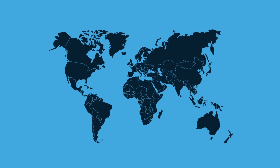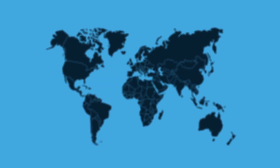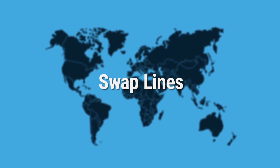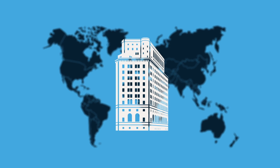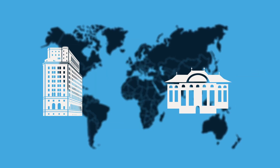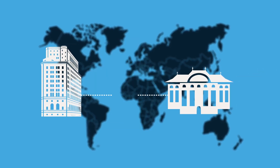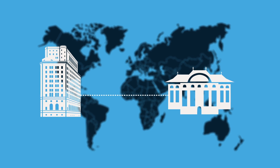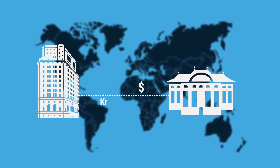One way the Fed does this is by entering into U.S. dollar liquidity arrangements, or swap lines, with foreign central banks. Acting on behalf of the Federal Reserve System, the New York Fed and a foreign central bank agree to exchange, or swap, currency of equal value for a set period of time.